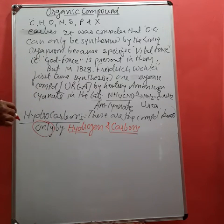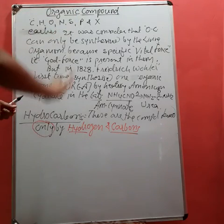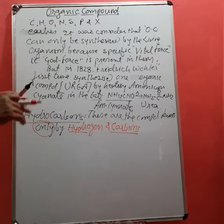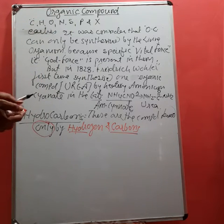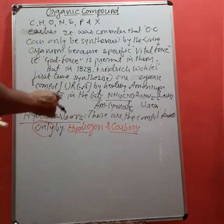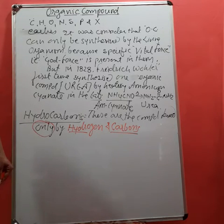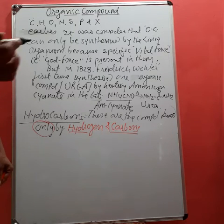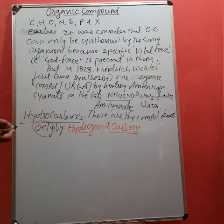The name of these compounds is hydrocarbons because they consist only of hydrogen and carbon. In organic compounds, the composition may include various elements, but it is not necessary that all of them must be present. Any two, three, or four elements can combine to form different types of organic compounds. When only carbon and hydrogen combine, they form hydrocarbons. Hydrocarbons are called the simplest organic compounds, and from them we can prepare a large number of other organic compounds.